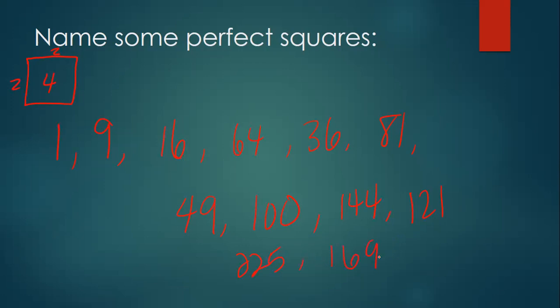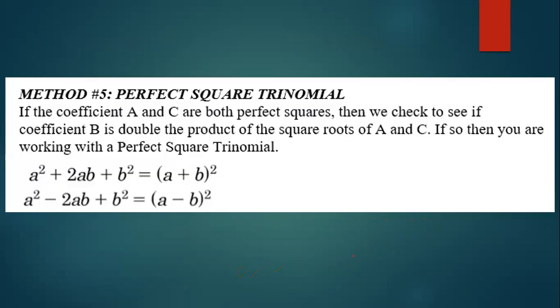All right. So we're getting the gist of what a perfect square is, right? We're all good. So we're going to be focusing on if my A and my C are both perfect squares, there is a shortcut. It's called the perfect square trinomial. If your A and your C are perfect squares, then all you have to do is find their square roots. And then you're either adding or subtracting. Whether you're adding or subtracting depends on the value of your B term.